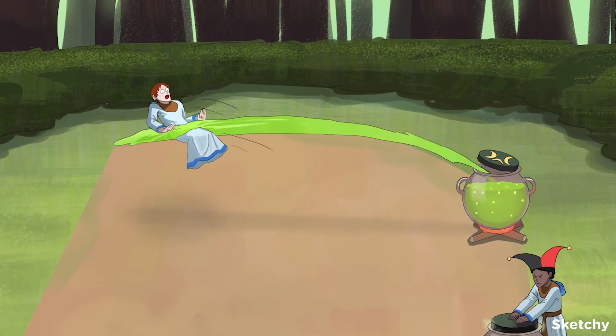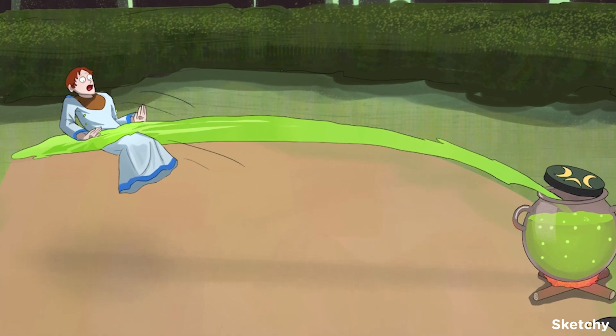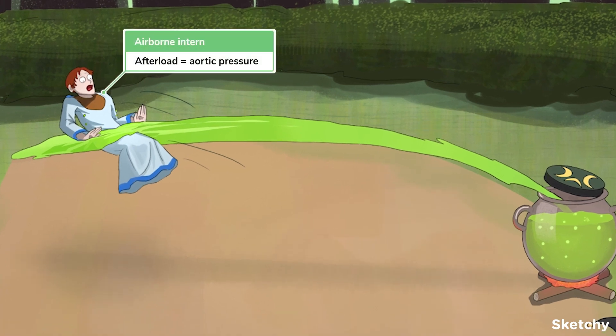During this phase, the peak pressure is called the afterload, which is the pressure the heart has to work against to eject blood. For the left ventricle, this is the aortic pressure, and is represented by this airborne intern who was responsible for maintaining pressure in the cauldron by pressing on its crescent moon lid. Instead, he was blasted skyward to the top of this arc by a pressurized jet of boiling hot potion. Really hope interns get insurance.